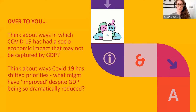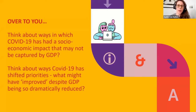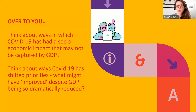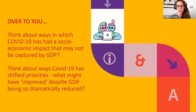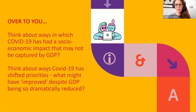Next exercise: think about in which ways COVID-19 has had a socioeconomic impact that may not be captured by GDP. Also think about ways in which COVID-19 has shifted priorities — what might have improved despite GDP being so dramatically reduced. Although we've seen almost a 10% fall in GDP, maybe something has improved socioeconomically for you or for society as a whole. Over to you — one minute, anything you can think of. Tanya, maybe you can feed me the input we receive.